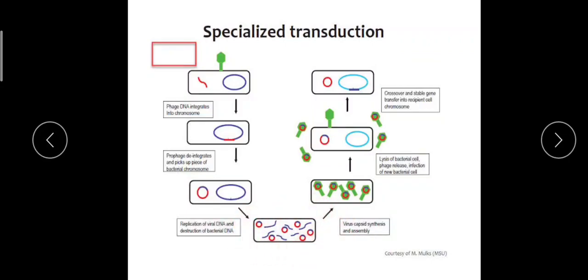Once dissociated from the chromosome, it goes on for replication. Inside this bacterium, replication of viral DNA occurs. Soon after, the bacteriophage needs not only the genetic content but it also has to synthesize its outer capsid. So when the viral DNA replication gets over, it disintegrates the chromosome of the bacteria.